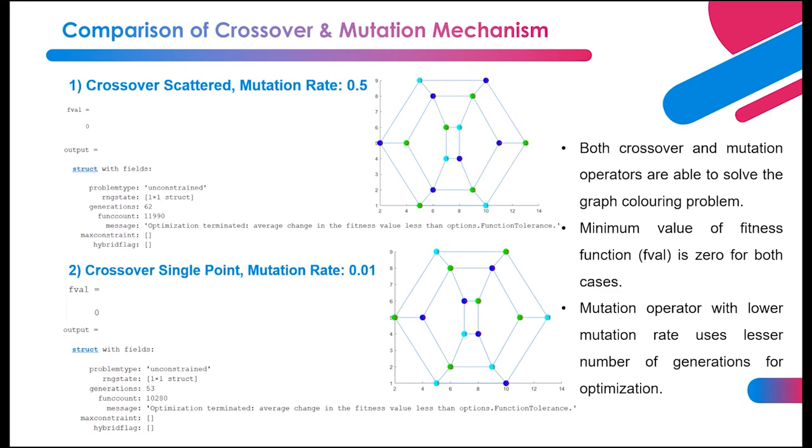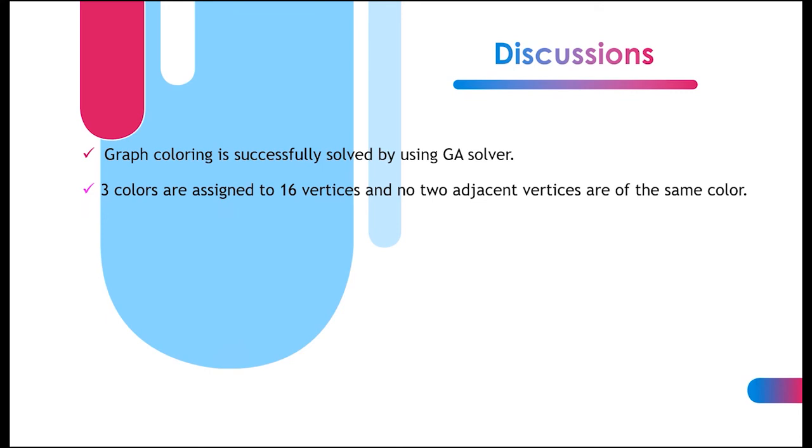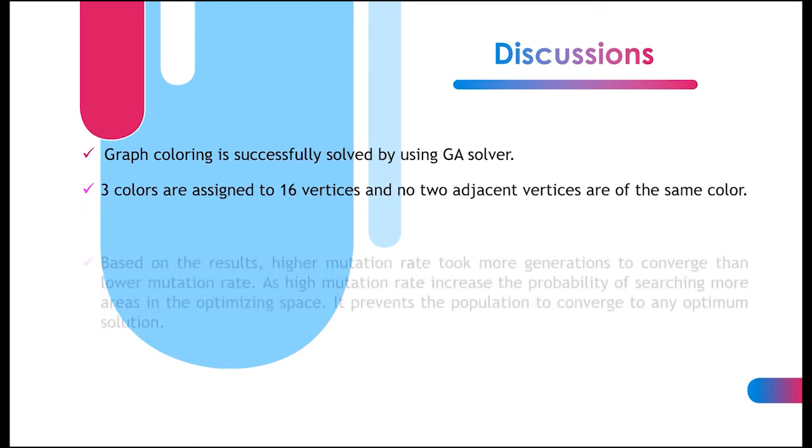Graph coloring problem in this project is successfully solved by GA solver, as three colors are assigned to 16 vertices and no two adjacent vertices are of the same color. Based on the results, higher mutation rate took more generations to converge than lower mutation rate.